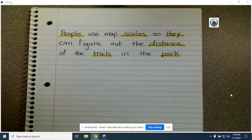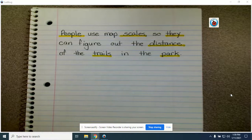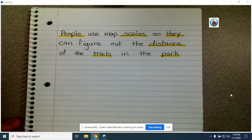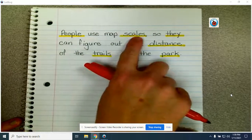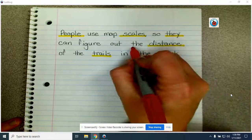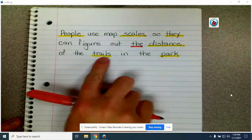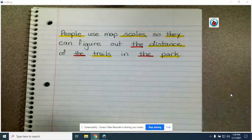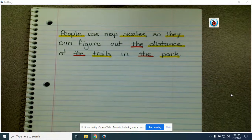Now we want to underline in red the articles. Remember, an article is a word that comes right before a noun, and we have three articles: a, an, and the. So we're looking at the words that come right before our noun. Distance, we have the. The trails, so that is an article, and the park, that is also an article.